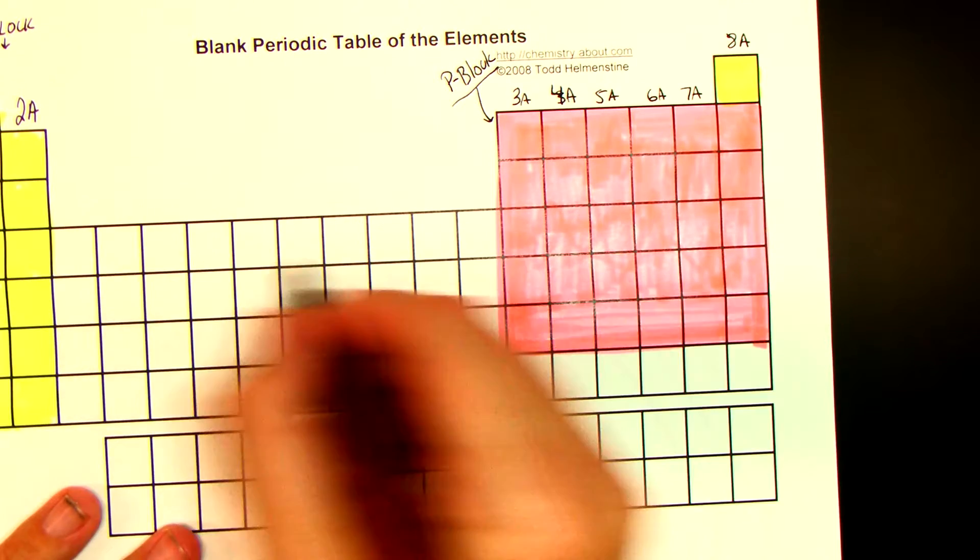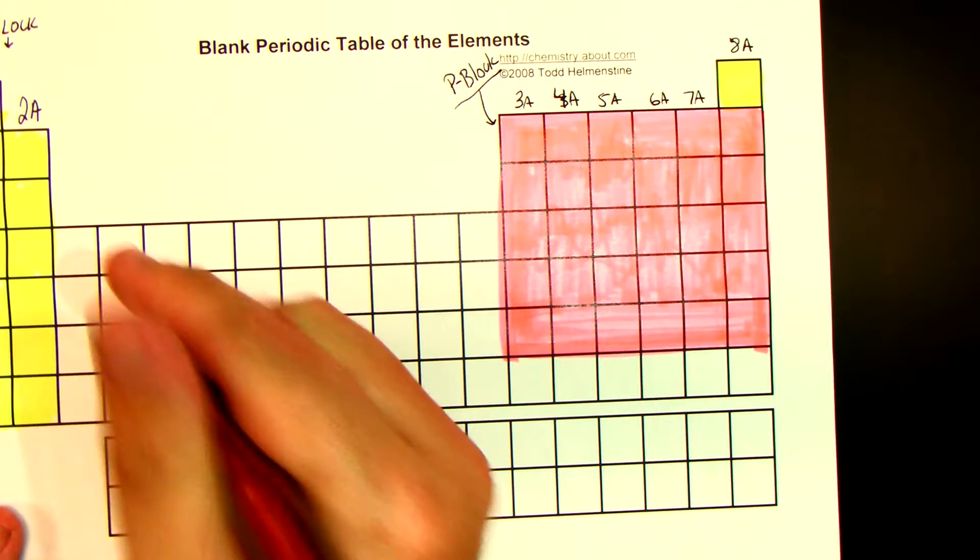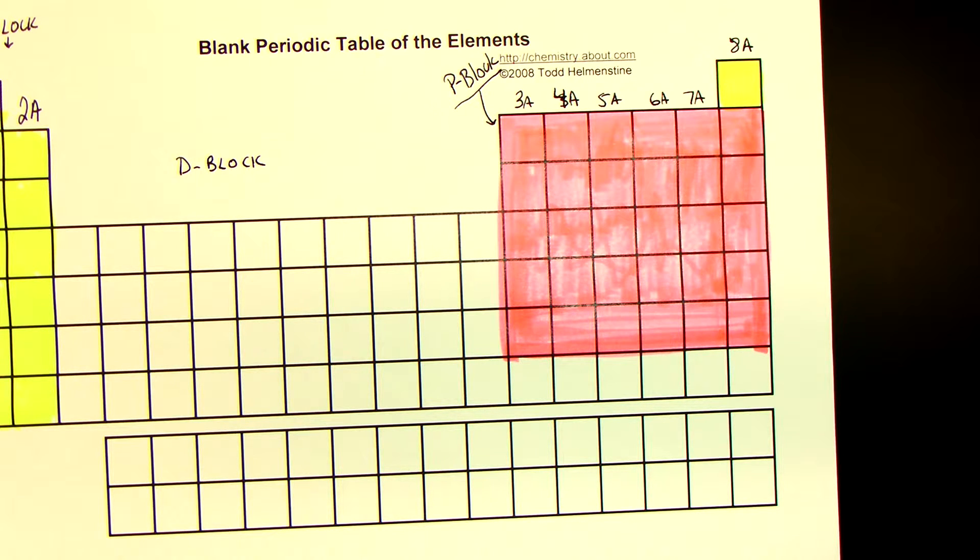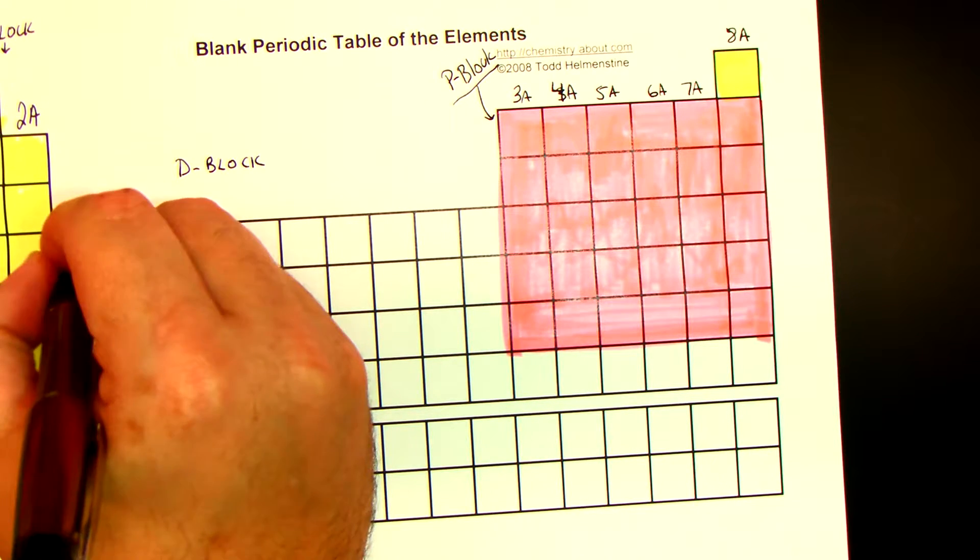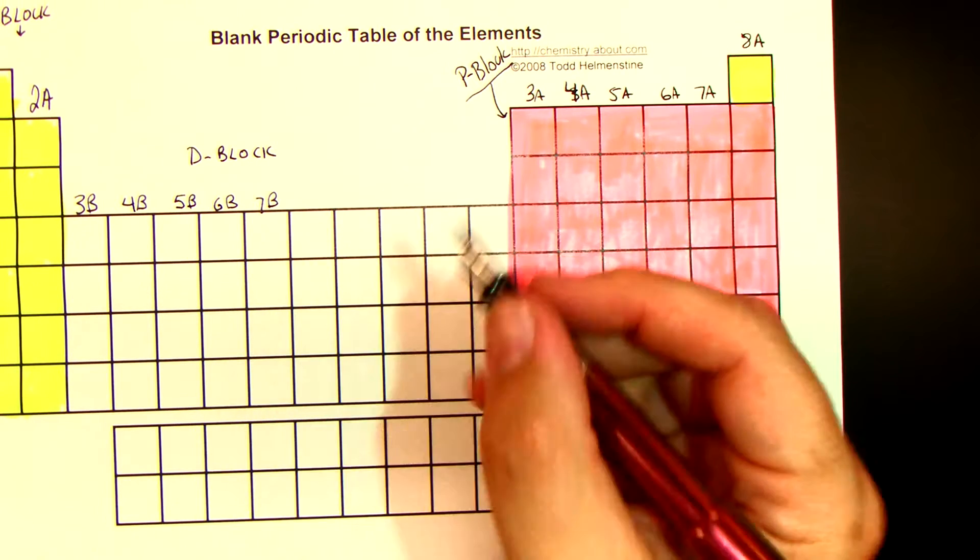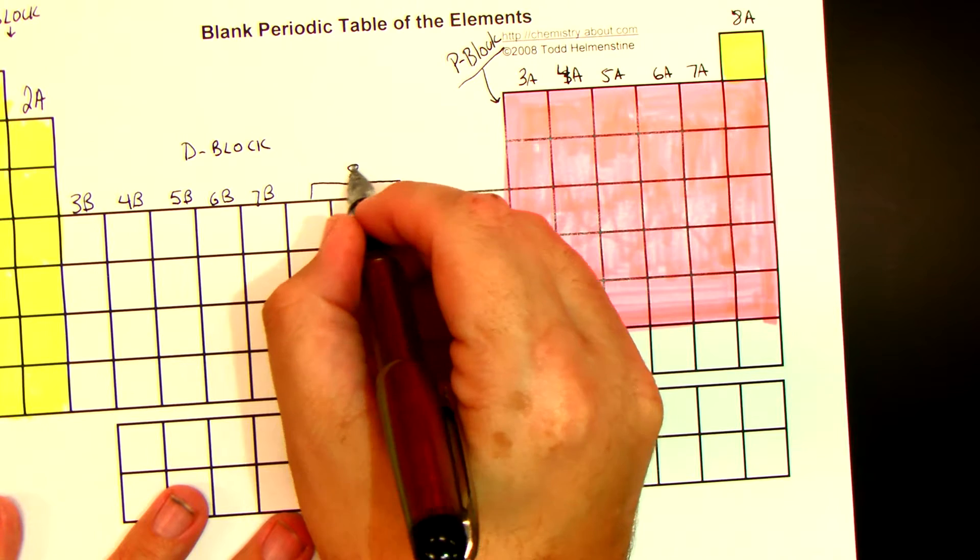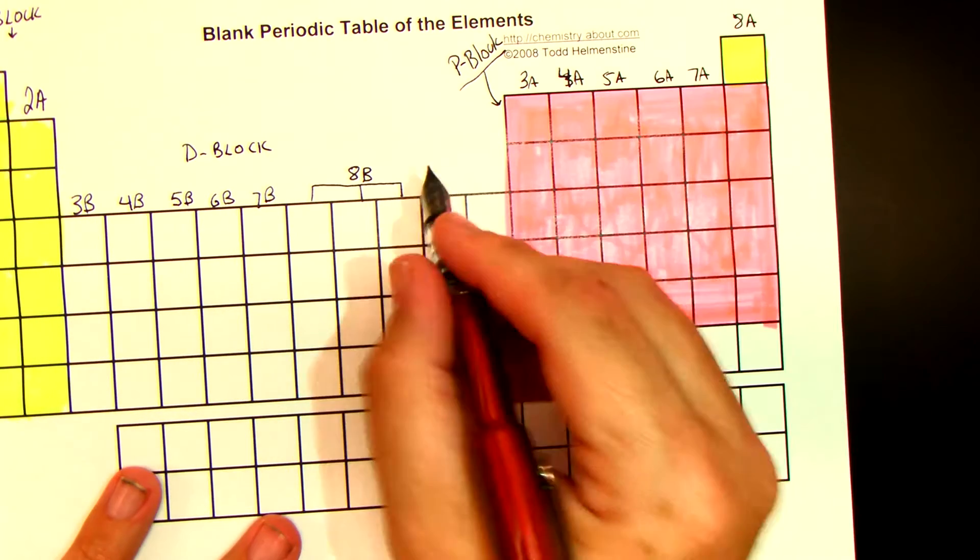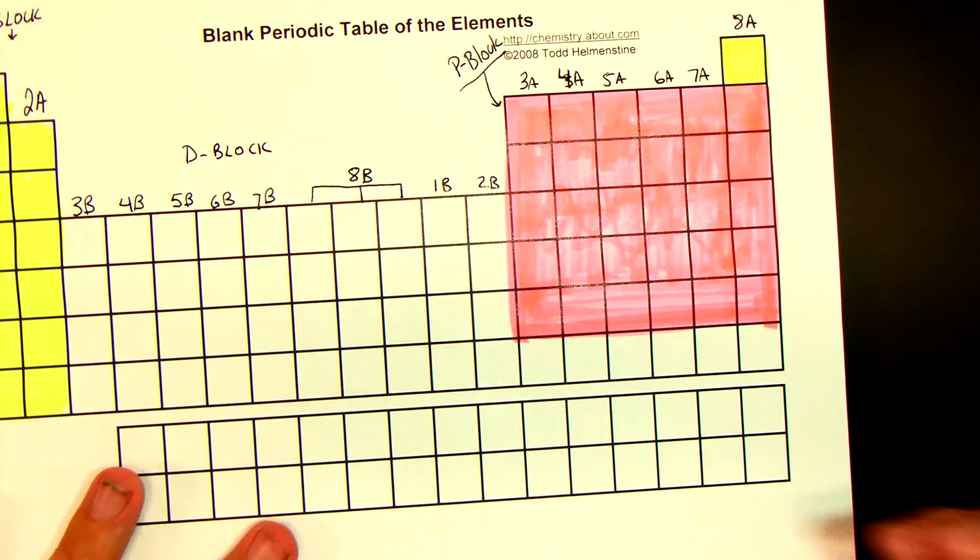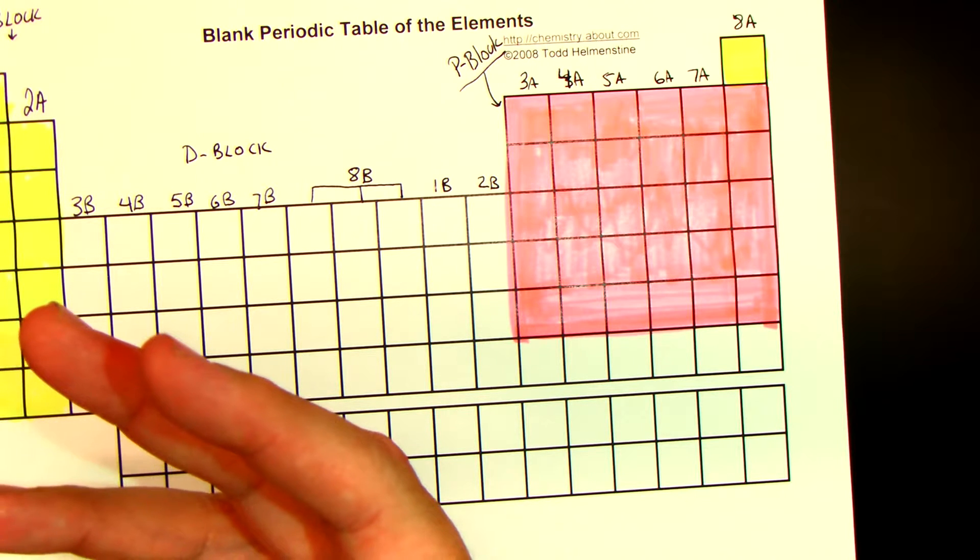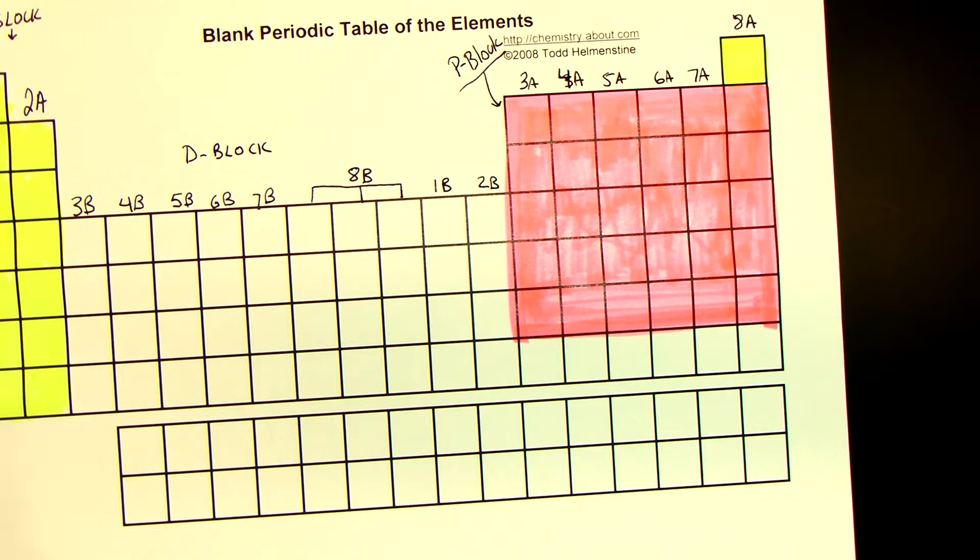Now, down here in the in-between regions between the S and the P block is what we call the D block. And it has a weird numbering as far as the columns go, the groups go. So it starts with 3B. And then it goes 4B. Then it goes 5B. Then 6B. 7B. And then there's three in a row that are all considered 8B, which we will examine later. And then, to make things worse, 1B, and then 2B. So it starts at 3, goes to 7, then 8 gets three of them, because I guess 8 is special, which we'll discover why later. And then it goes back to 1 and 2.